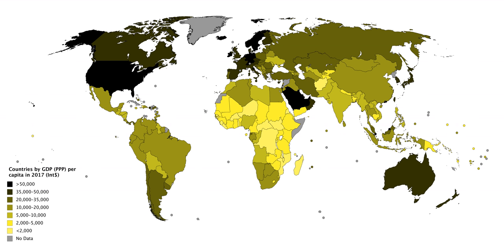Comparisons of national wealth are frequently made on the basis of nominal GDP and savings, not just income, which do not reflect differences in the cost of living in different countries. Hence, using a PPP basis is arguably more useful when comparing generalized differences in living standards between nations, because PPP takes into account the relative cost of living and the inflation rates of the countries, rather than using only exchange rates, which may distort the real differences in income. This is why GDP per capita is often considered one of the indicators of a country's standard of living, although this can be problematic because GDP per capita is not a measure of personal income.